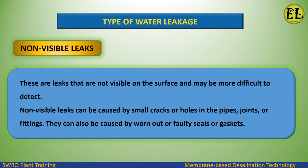Non-Visible Leaks. These are leaks that are not visible on the surface and may be more difficult to detect. Non-visible leaks can be caused by small cracks or holes in the pipes, joints, or fittings. They can also be caused by worn-out or faulty seals or gaskets.